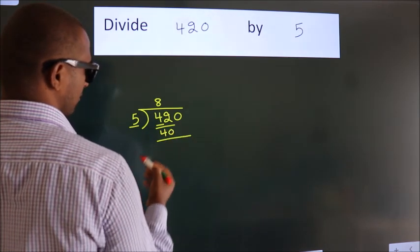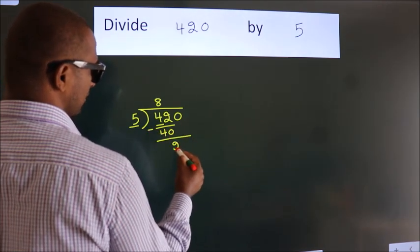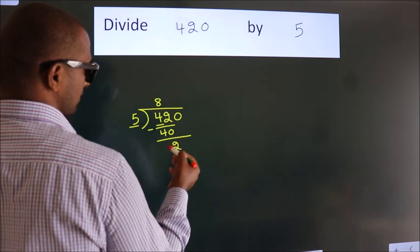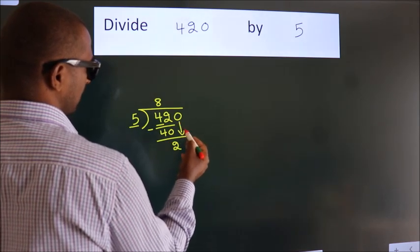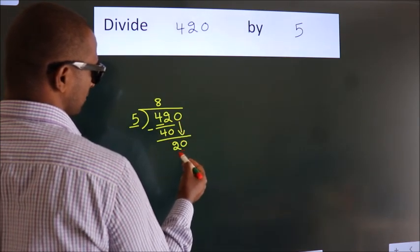Now we should subtract. We get 2. After this, bring down the beside number, so 0 down. So we get 20.